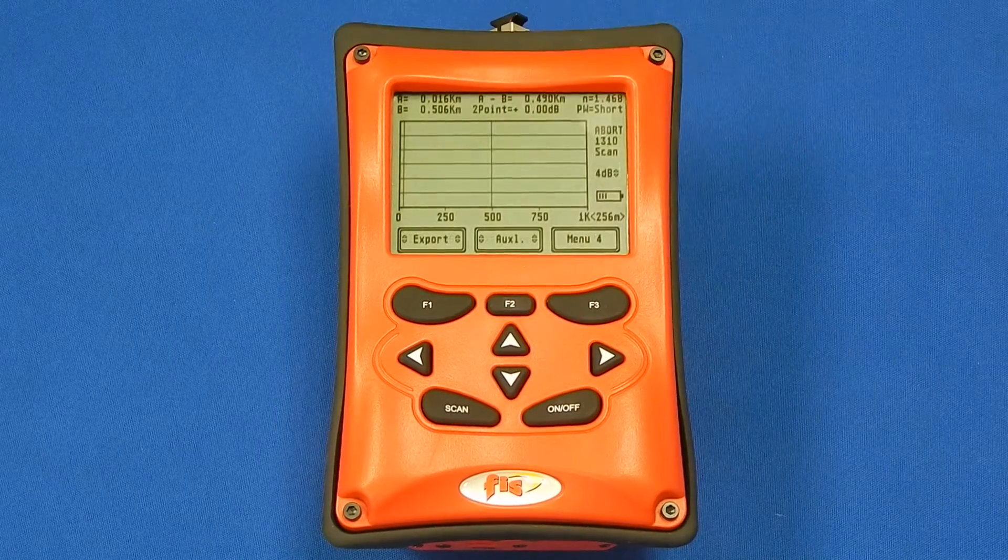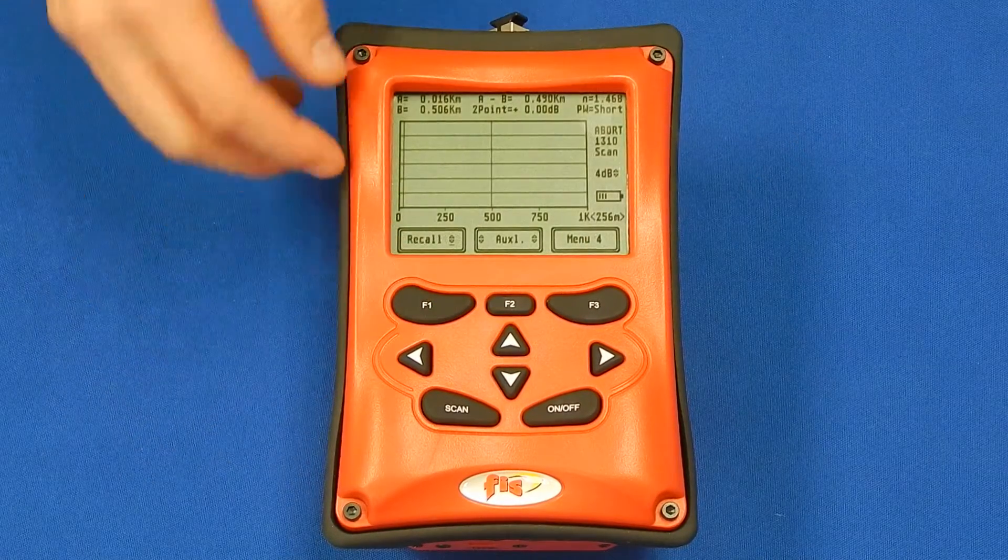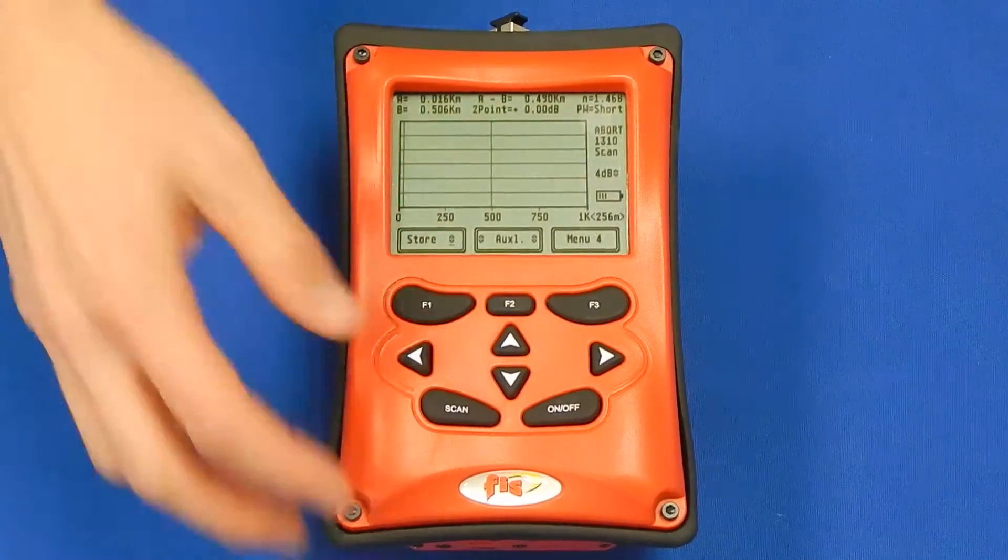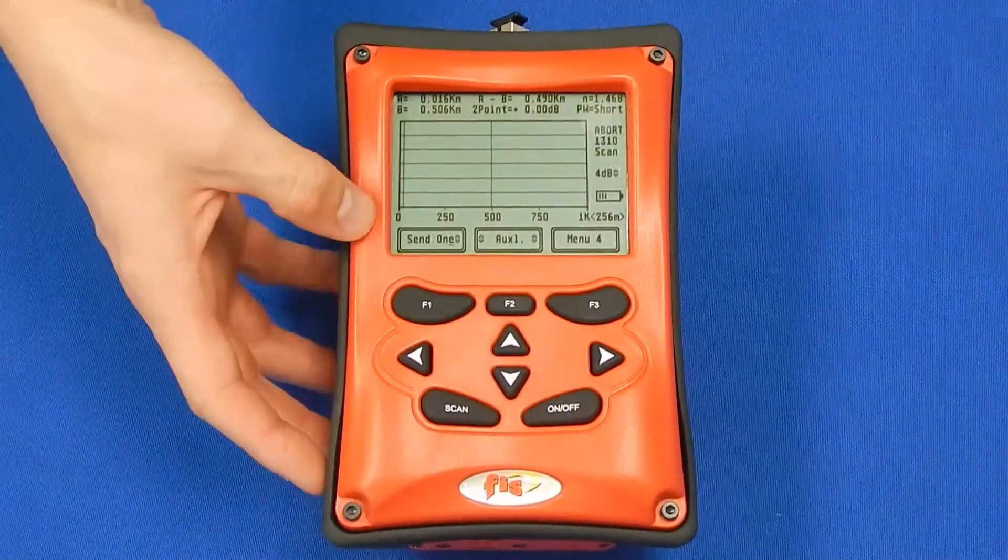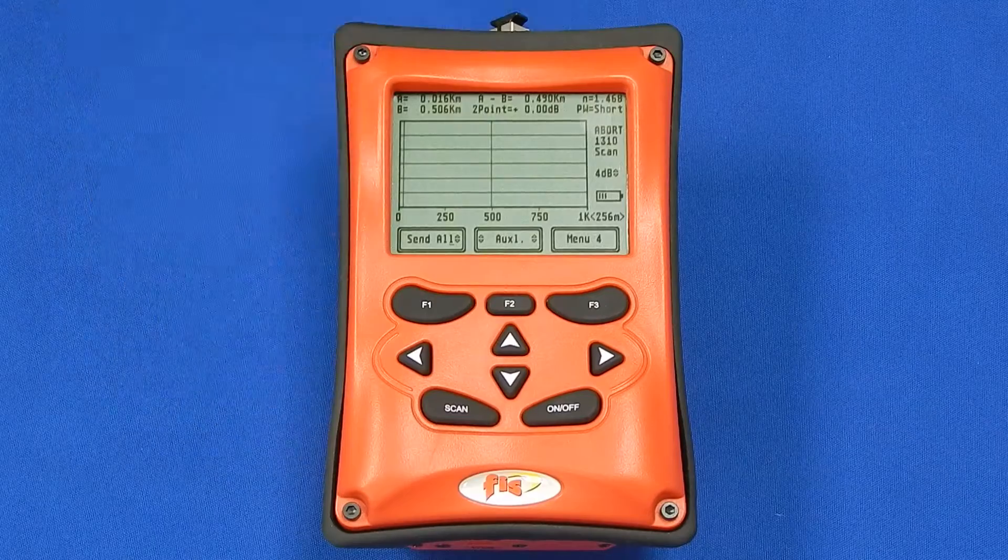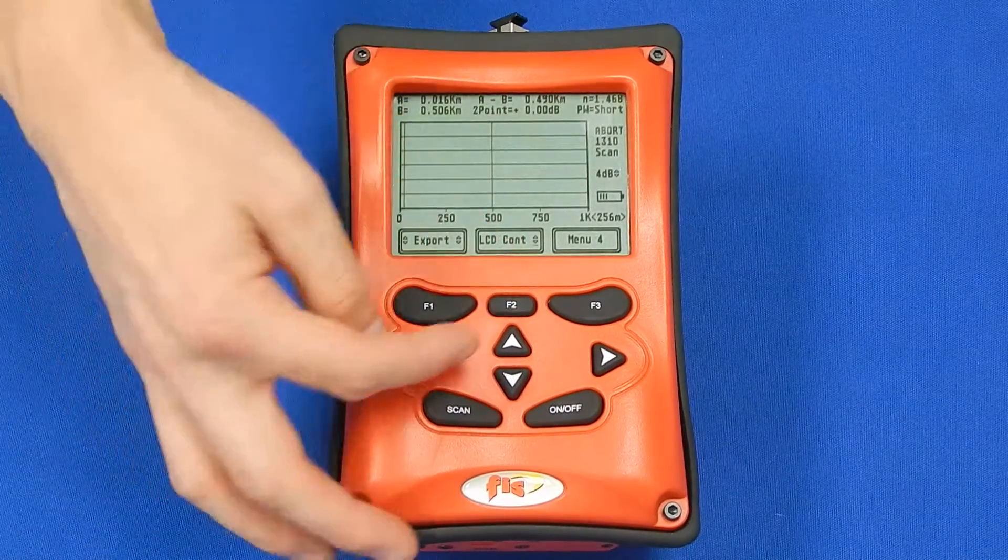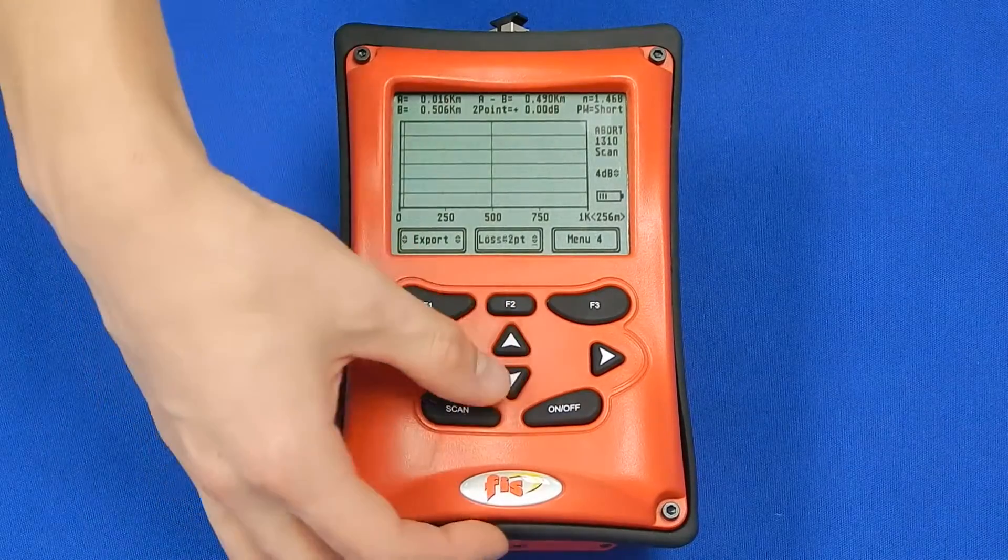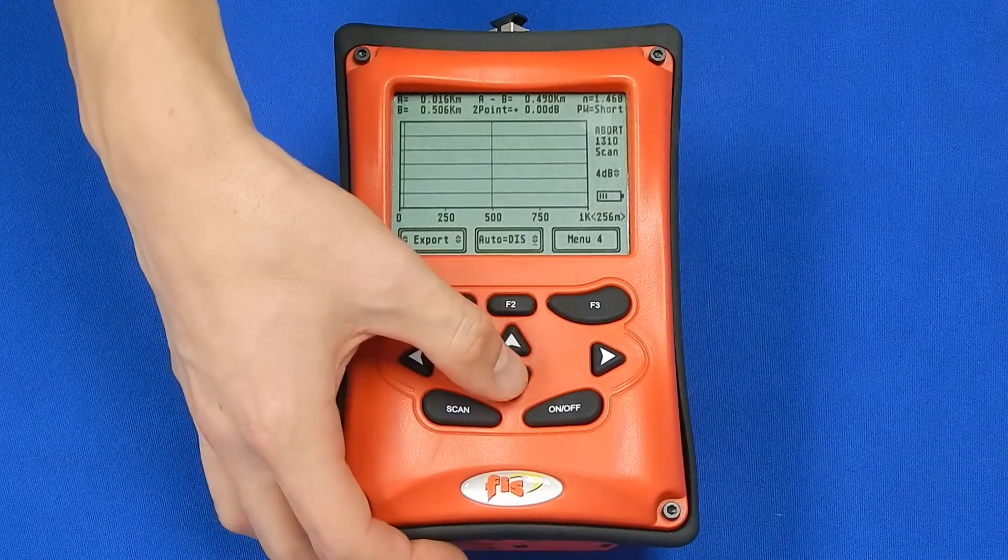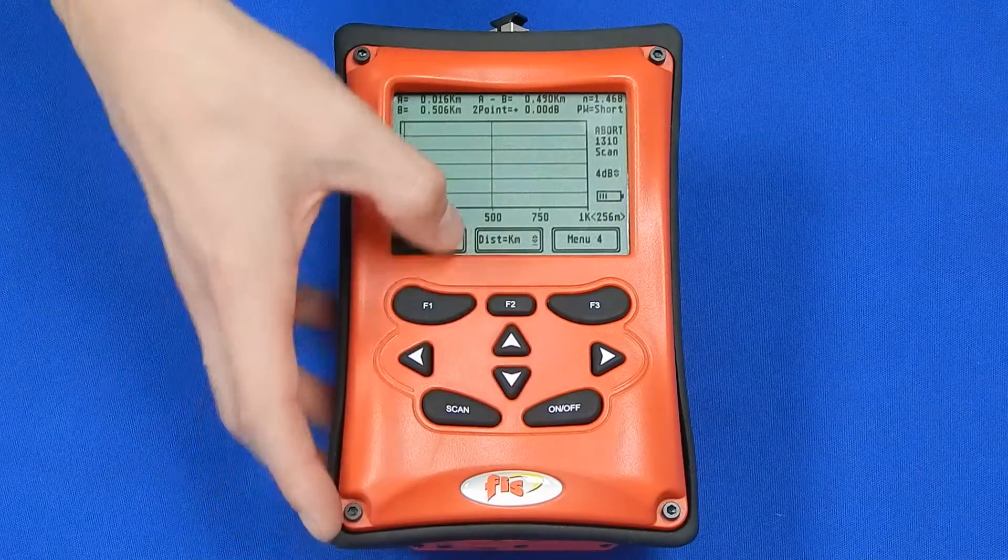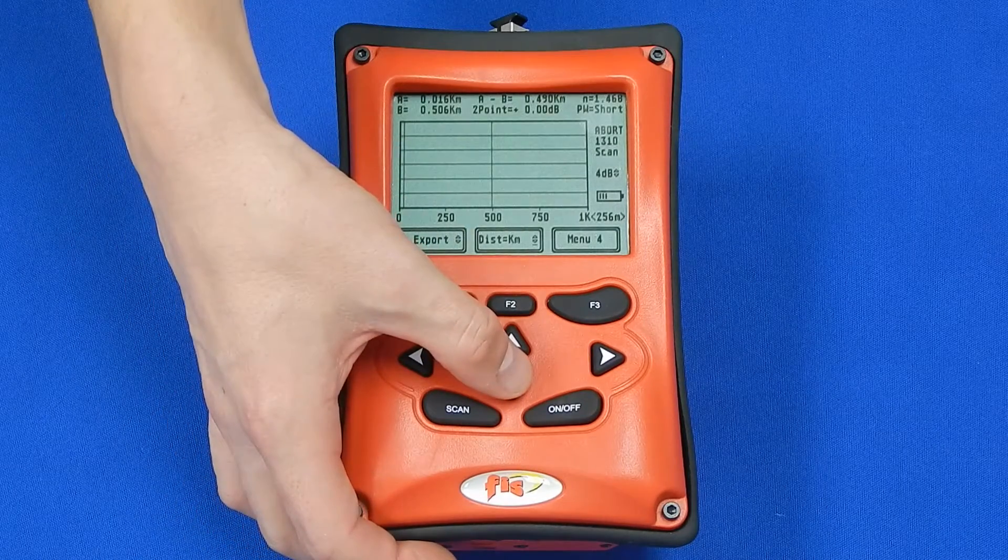In menu four, traces can be stored or recalled on the unit and also sent to a PC. The LCD screen contrast and backlight can be adjusted. You can also access the settings for loss readings on the unit and settings for extended range and kilometer or feet options.